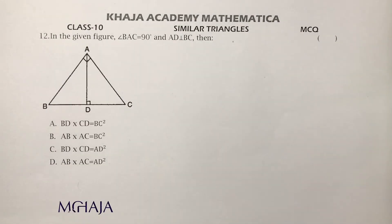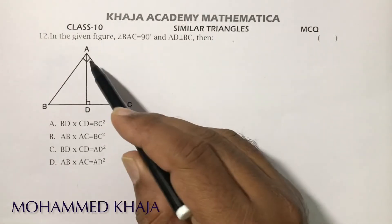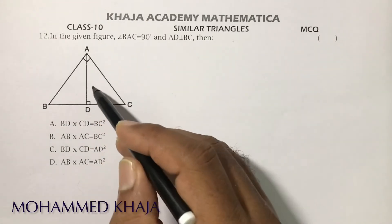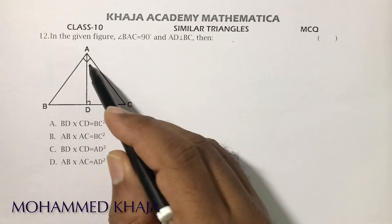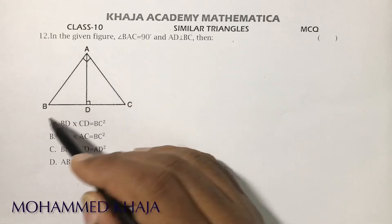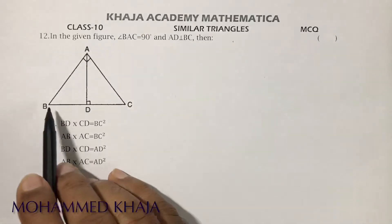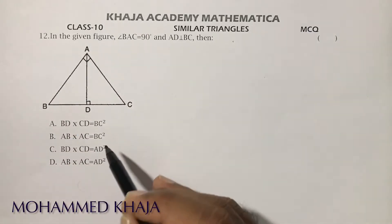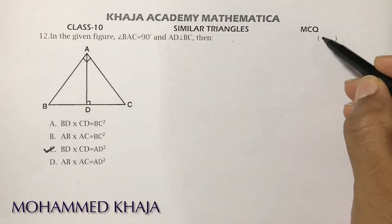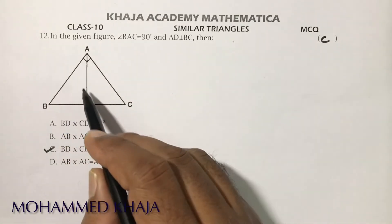Angle BAC is 90° and AD is perpendicular to BC. In a right-angle triangle, if a perpendicular is drawn from the right angle to the hypotenuse, AD is called the mean proportion. So AD² = BD × DC. The correct option is C.